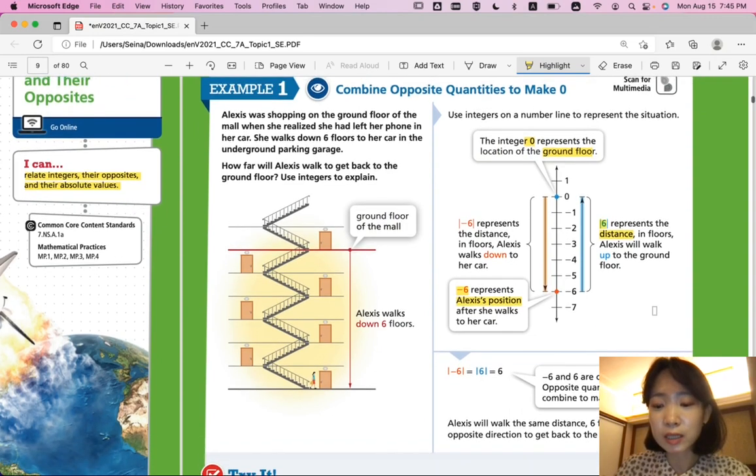Negative six represents Alexis' position after she walks to her car. And positive six, or the absolute value of six, is the distance. She will walk up to the ground floor. So negative six and six are opposites. They're called the opposites. When they have the same distance to zero, but they're just different signs, opposite quantities combine to make zeros. And they're called opposites. So Alexis will walk the same distance, six floors, in the opposite direction to get back to the ground floor.